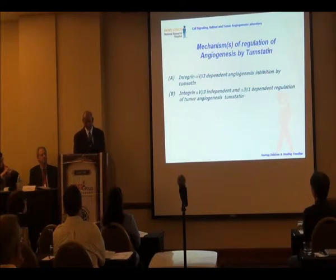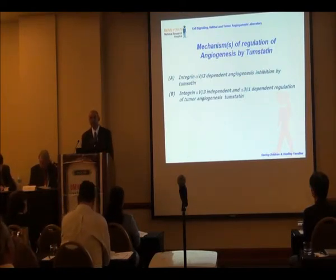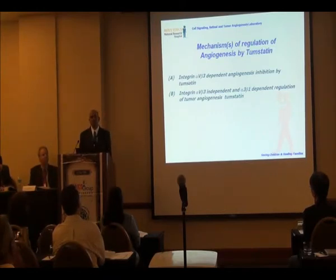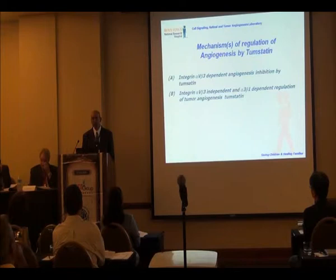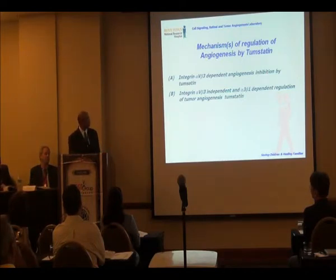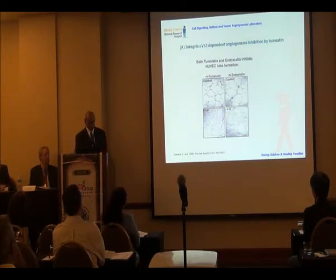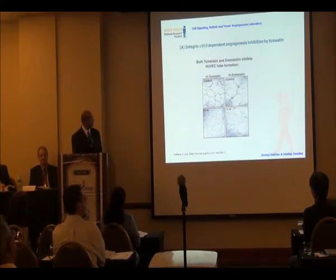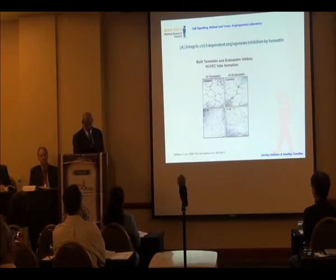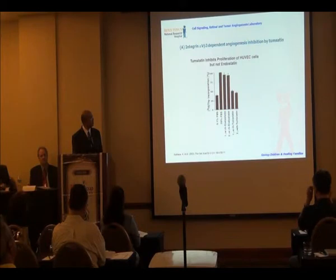The first molecule is alpha-3 tumstatin — it is the alpha-3 chain of type IV collagen. It binds to alpha-V-beta-3 integrin, regulating translation. Later we found it also binds to alpha-3-beta-1, and it is predominantly inhibiting alpha-V-beta-3 and regulating tumor angiogenesis by inhibiting COX-2, one of the pro-inflammatory molecules. We tested this in fundamental experiments — tumstatin plays a role in tube formation inhibition, migration, and proliferation. Tumstatin is inhibiting tube formation and inhibiting proliferation dose-dependently in endothelial cells, whereas endostatin is not, confirming they bind to different integrins mediating different segments.